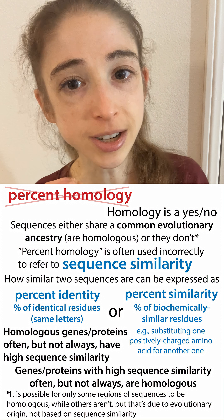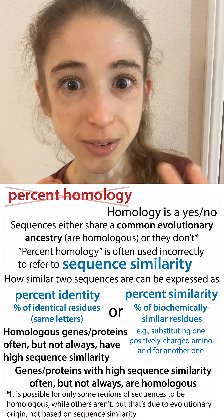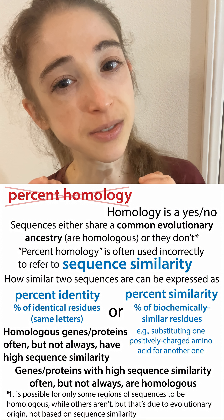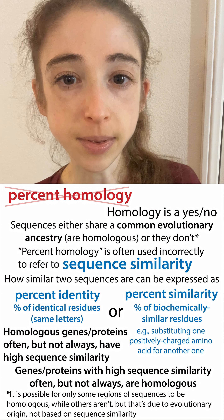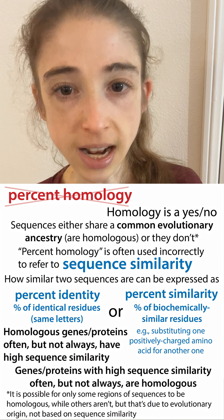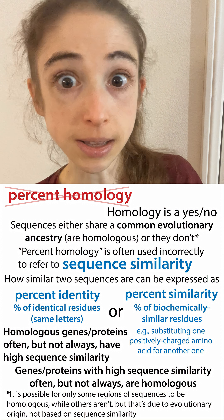You really don't want to refer to percent homology — that's a no-no. But it's a very common no-no, so don't feel bad if you've done it. Just try to avoid it in the future and use percent similarity or percent identity, which is what you really mean.